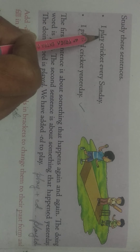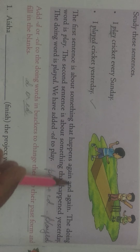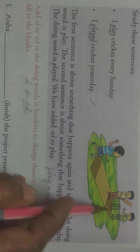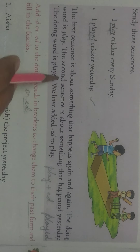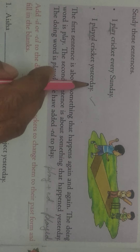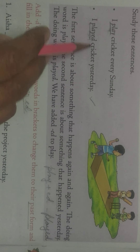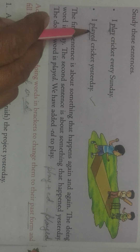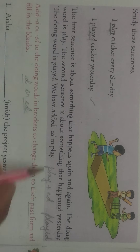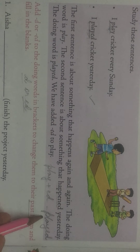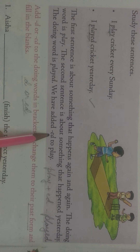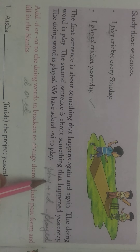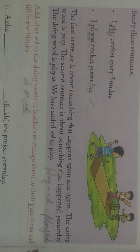So this verb — play — is in the present form, and the verb played is in the past form. The first sentence is about something that happens again and again; the second sentence is about something that happened yesterday. We have added ED to play to make it played, and that is why it becomes the past form. Understand children? Past form is simply when we add D or ED to a verb — the action word — and the new word is called the past action word.